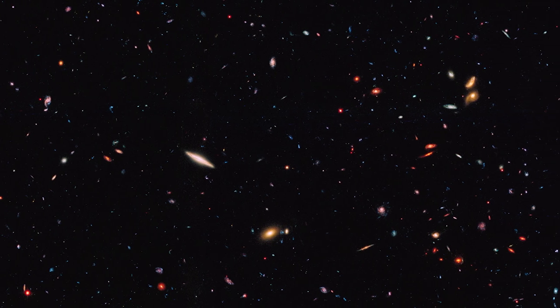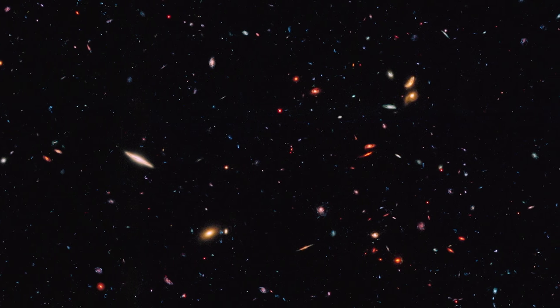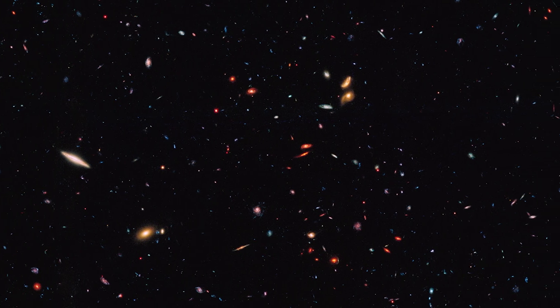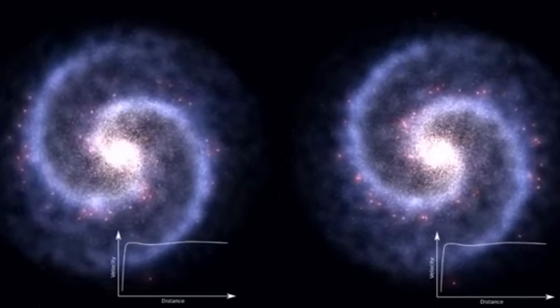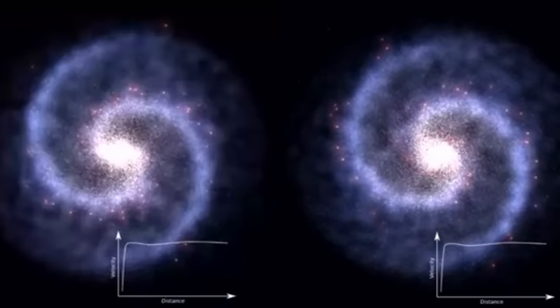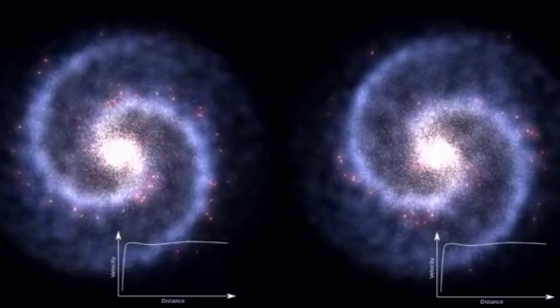we should see that if we added up all the angular momentum of all the galaxies in the entire universe, they should equal zero. Meaning that there should be about equal number of galaxies spinning in the right-hand revolution versus the left-hand revolution.